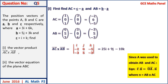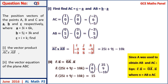The next part requires the vector equation of the plane. The vector equation of the plane is r dot n equals OA dot n, where n is the normal vector perpendicular to both AB and AC. Since we used point A to find AB and AC, we use OA on the right-hand side. Taking the dot product gives r dot (25i plus 9j minus 10k) equals 15 as the vector equation of the plane ABC.